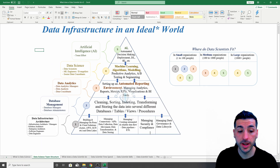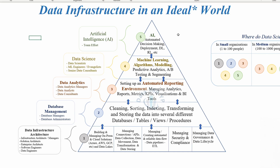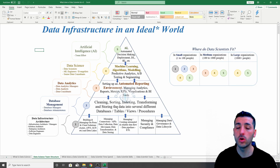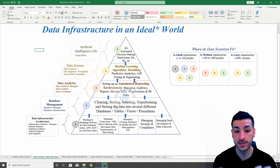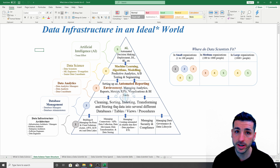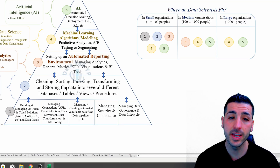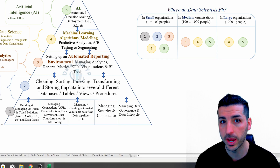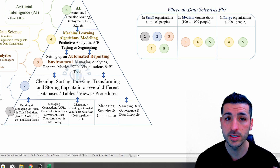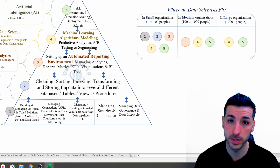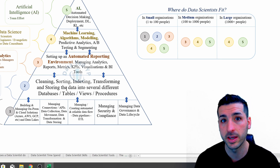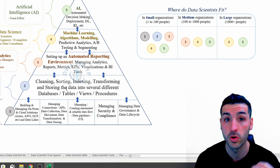This pyramid shows the data infrastructure of a business in an ideal world. Not all organizations are going to follow exactly the same data infrastructure, just because every organization is different. However, this is like an average data infrastructure that organizations tend to follow. Data infrastructures are dependent on two things: the size of the business, and the resources or money being put into their data infrastructure — whether or not they are a data-driven organization.